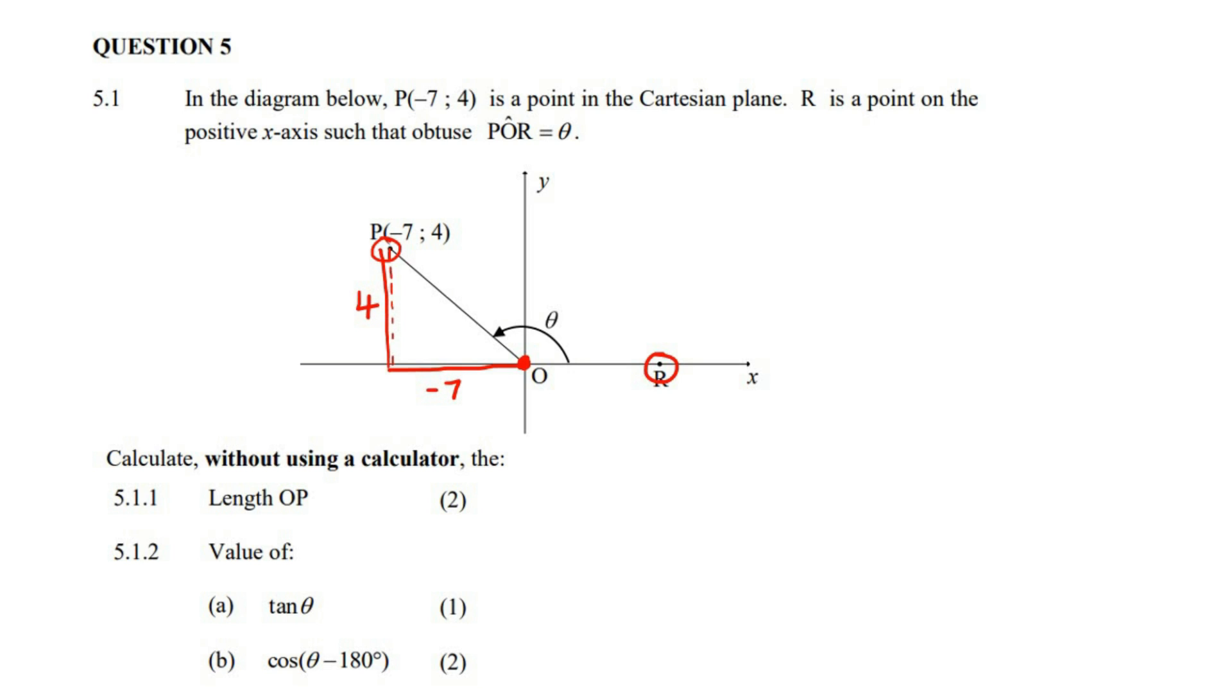If they want you to find the length of OP, you can just use Pythagoras. So we can just say four squared plus negative seven squared, and if you work that out, that'll be 65, and then just take the square root of 65. That'll just stay square root 65. So that would be the answer of OP.